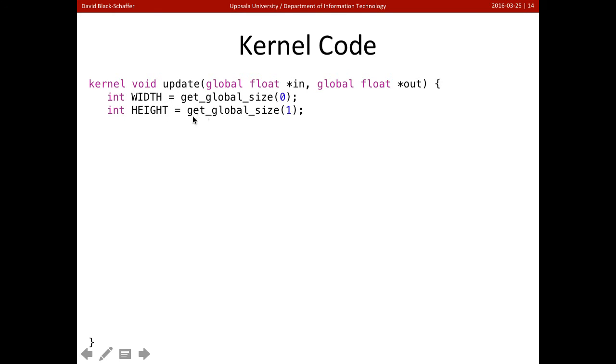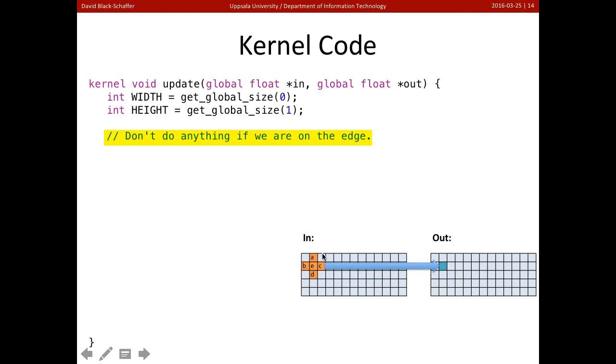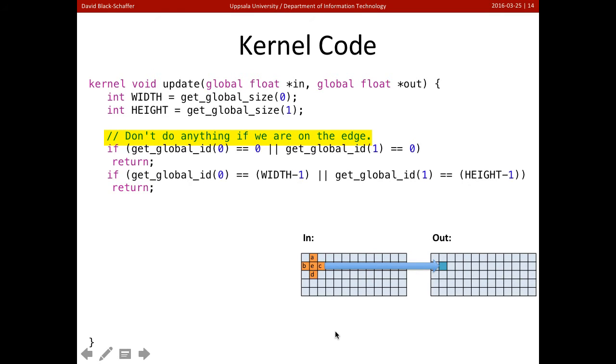Well, the first thing it does, it finds the size of the array we're going to process. And it does this because we need to avoid computing if we're on the edge. If we're on the edge and we try and access data off the edge, so here we are not on the edge and we can access data, but if we're in the corner here, we'd have problems if we tried to access data off the side because we'd end up crashing. So we check and see if we're on the edge, and if we are on the edge, we go ahead and return, so we don't process there.